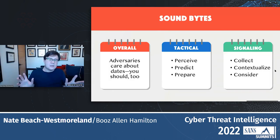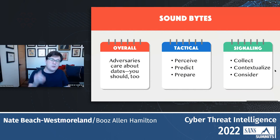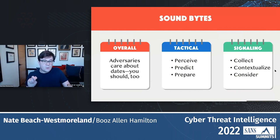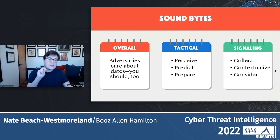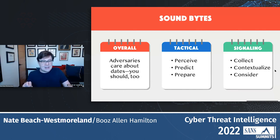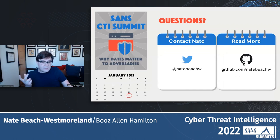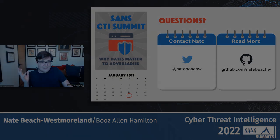To wrap this up, here are my three sound bites. One: dates matter to adversaries, therefore they matter to you. Two: if you want to defend against these adversaries, be perceptive of when you are weak — predict when the adversary will figure this out and prepare accordingly. Finally: if you are researching date-minded threats, start by gathering all necessary data just like I described, use it to place dates in context, and consider whether this changes your interpretation of an attack. If you want to learn more about some of these attacks, I've dropped a bunch of sources on a GitHub repo. Thanks for listening and I'm happy to take questions.